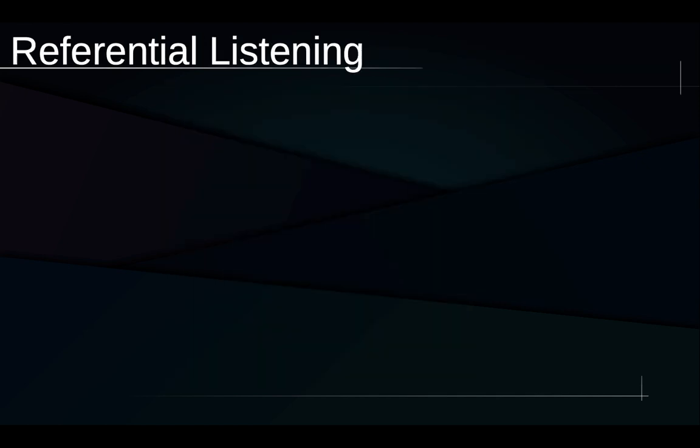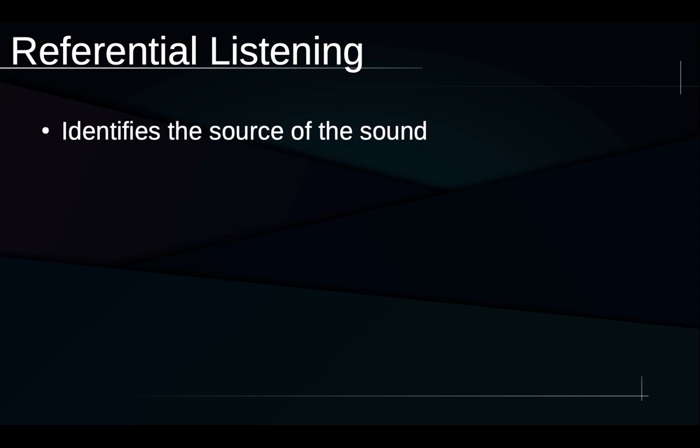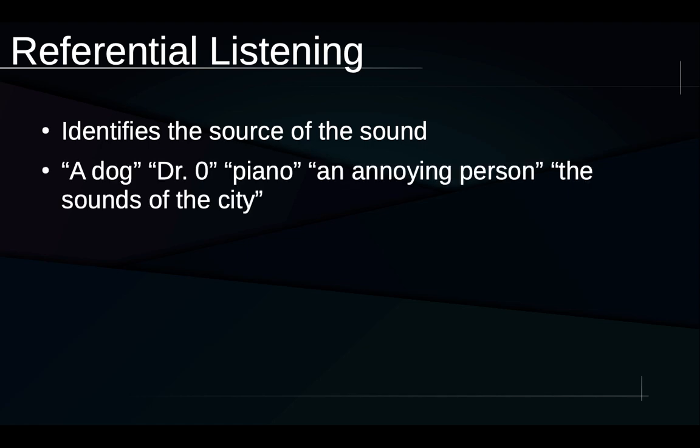Referential listening is a type of listening where primarily what we're doing is identifying the source of the sound. For example, if I hear something and I say 'it's a dog,' I'm not really saying anything about what the sound sounds like, but I'm definitely saying something about where the sound came from — about where it originated.